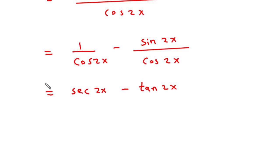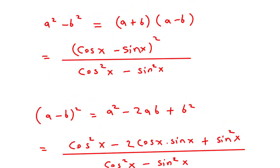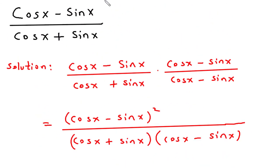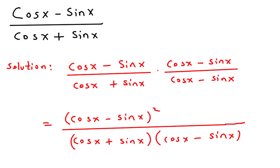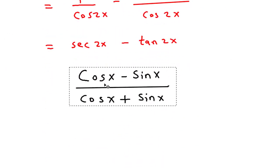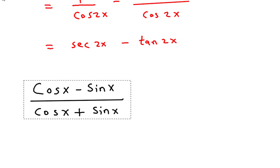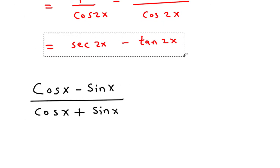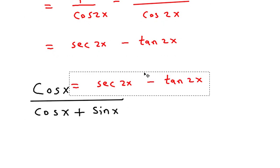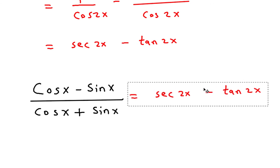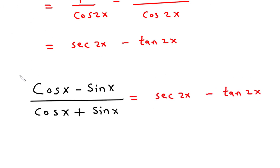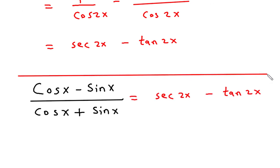Now 1 by cos 2x equals sec 2x, and sin 2x by cos 2x equals tan 2x. So the final answer is sec 2x minus tan 2x.